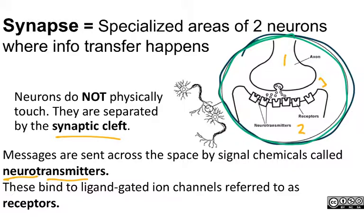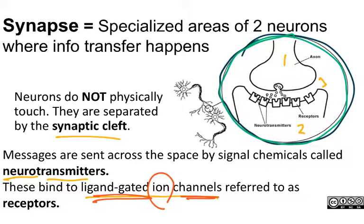These neurotransmitters diffuse across the synaptic cleft and bind to ligand-gated ion channels. Ions are what move through these channels. Ligand-gated ion channels are also called neurotransmitter receptors because they are receiving the signal. Their response to receiving the signal — meaning the neurotransmitter ligand has been bound — is to open an ion channel and allow charge to flow into the receiving cell, which then changes the amount of charge inside neuron number two.